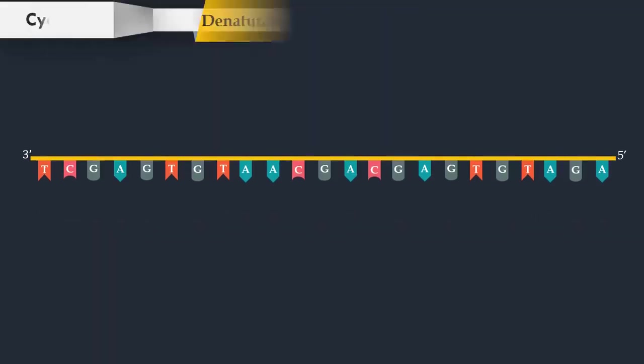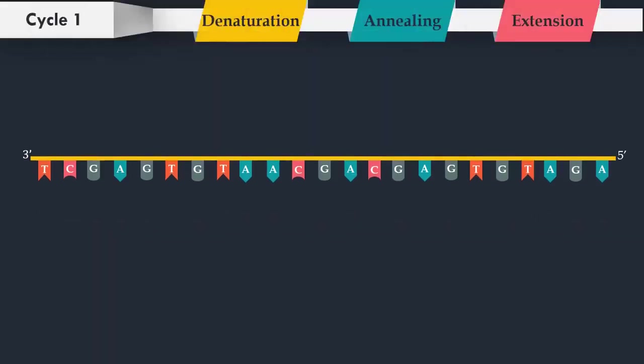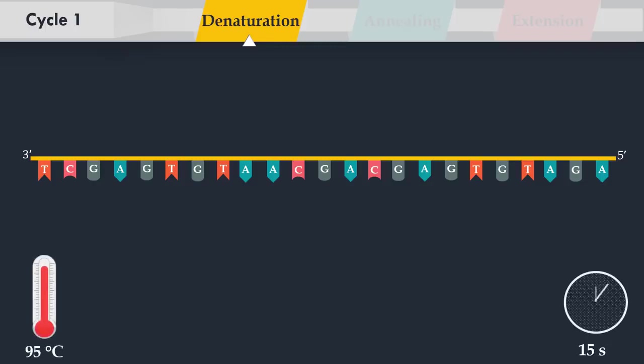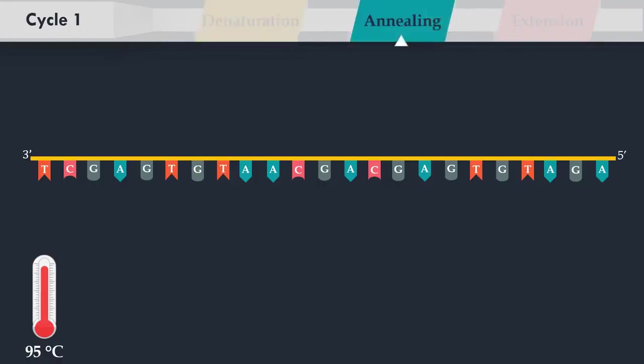PCR consists of a series of thermal cycles, with each cycle consisting of denaturation, annealing, and extension steps. Denaturation consists of heating the reaction chamber to 95 degrees Celsius and is used for denaturation of the double-stranded DNA template. In the next step, the reaction temperature is lowered to 58 degrees Celsius, allowing annealing of the forward primer to its complementary part of the single-stranded DNA template. The annealing temperature relies directly on length and composition of the primers.